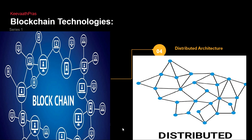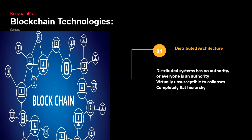This is how the distributed network actually looks. I also gave examples of what is centralized in real-time, decentralized, and distributed. You can see that if any crash happens we can recover — the network is resilient. In a distributed architecture, no one has authority, or everybody is a boss — it is virtually unsusceptible to collapse. It is a completely flat hierarchy — no director, manager, senior manager — everybody is the same. This cannot be broken, and this is why the distributed architecture scores and is gaining importance.